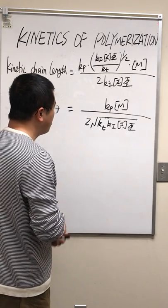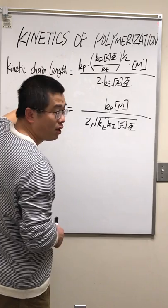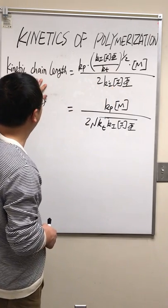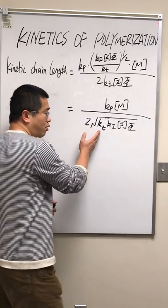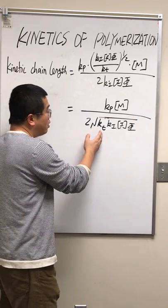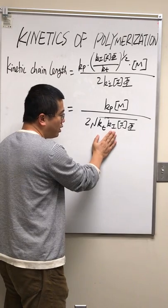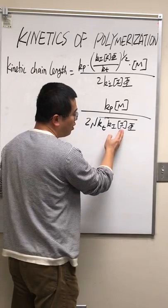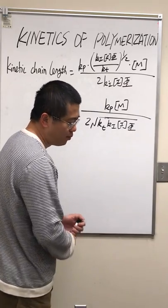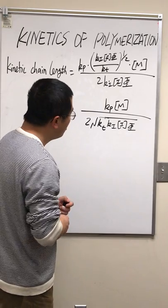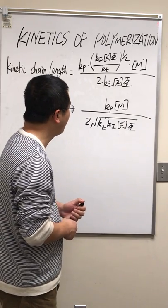This expression tells us: if the propagation reaction rate constant kP is large, we have a longer chain length. If we have a higher concentration of monomer [M], we have a longer chain length. If we have a really fast termination rate kT, we have a shorter chain length. If we produce new radicals faster — higher kI, higher concentration of I, or higher efficiency φ — we have a shorter chain length, because more chains start but each grows less.